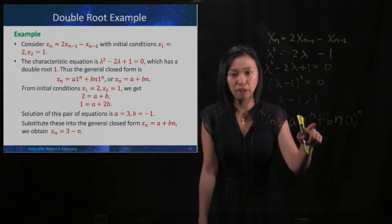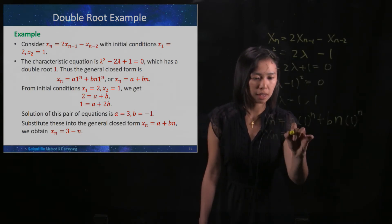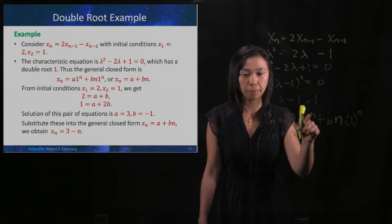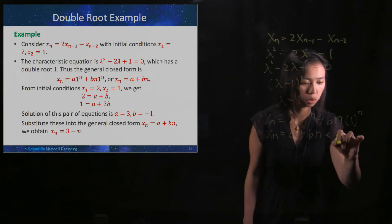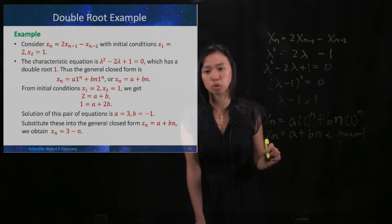And 1 to the power of n is 1, so xn is a, and then 1 to the power of n is 1, plus bn. And this is what we call the general solution.